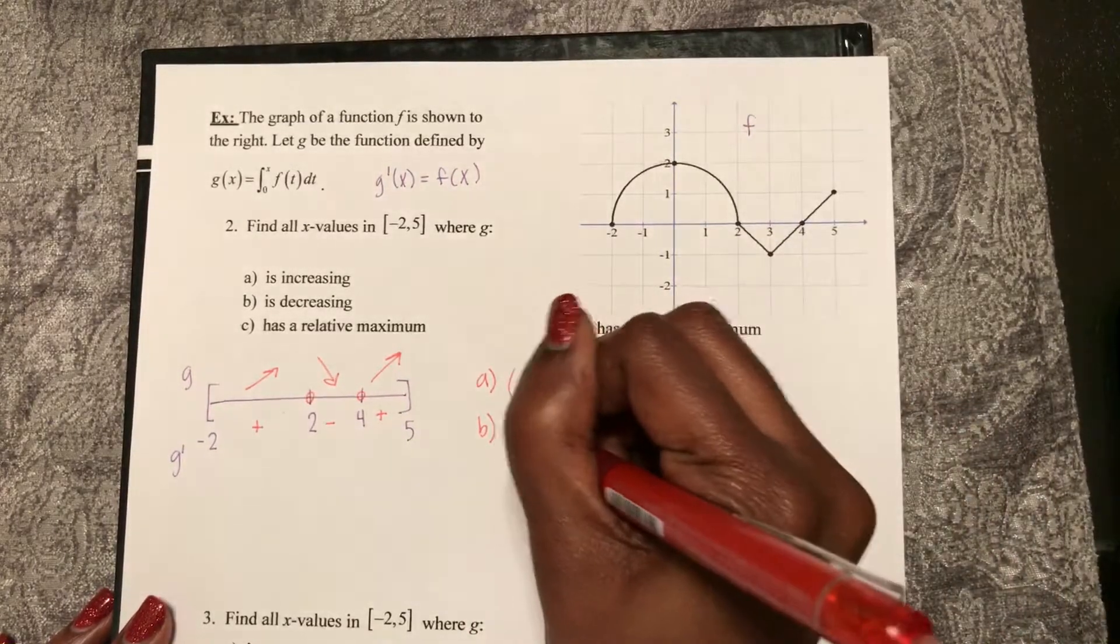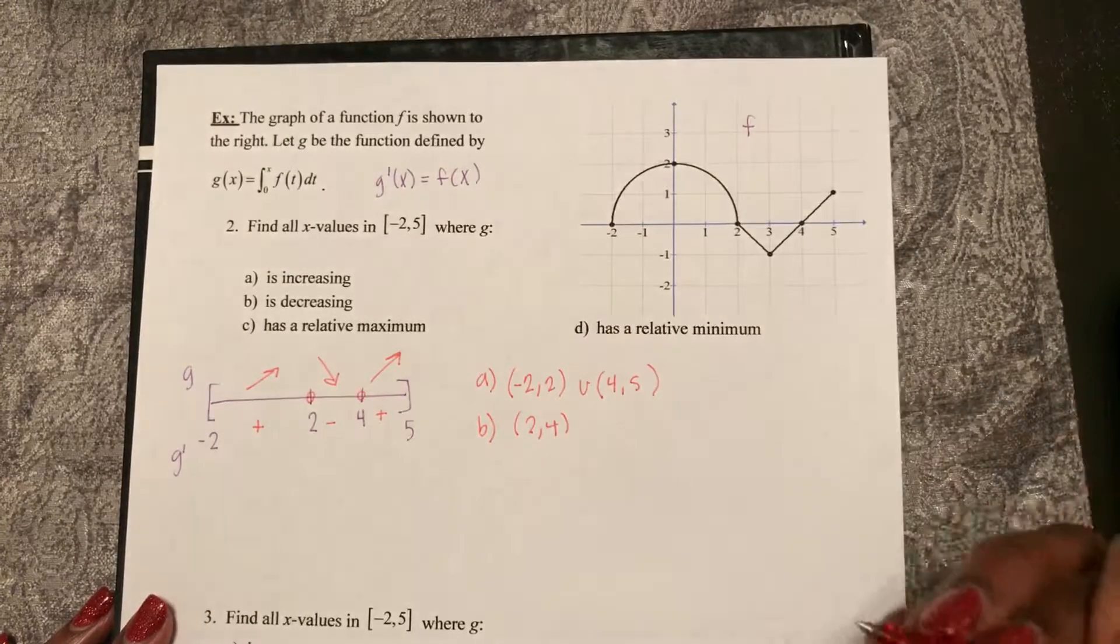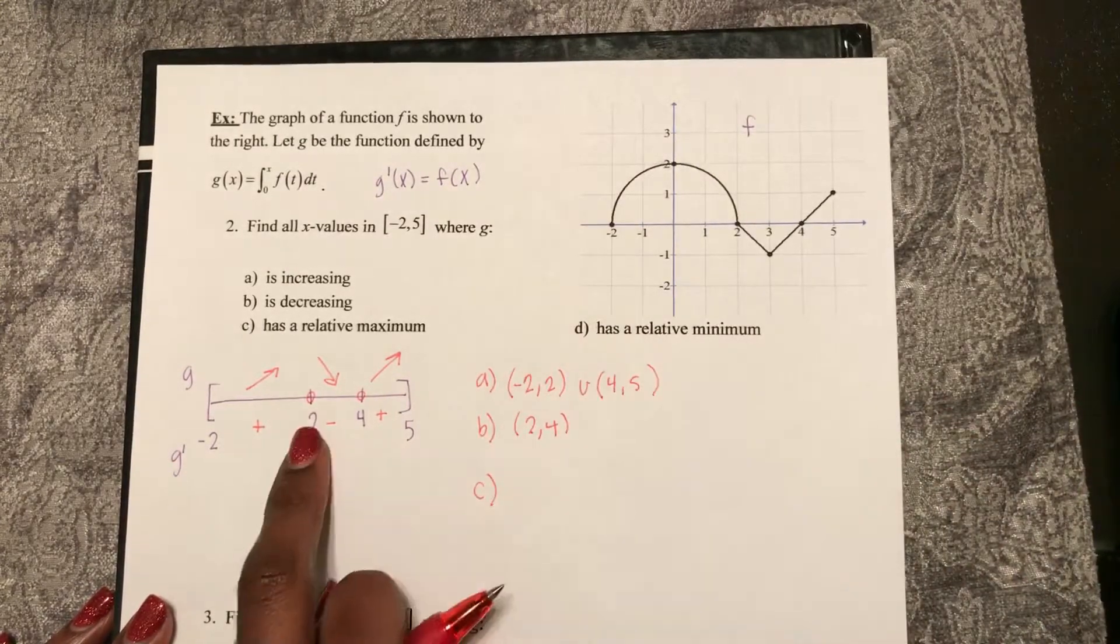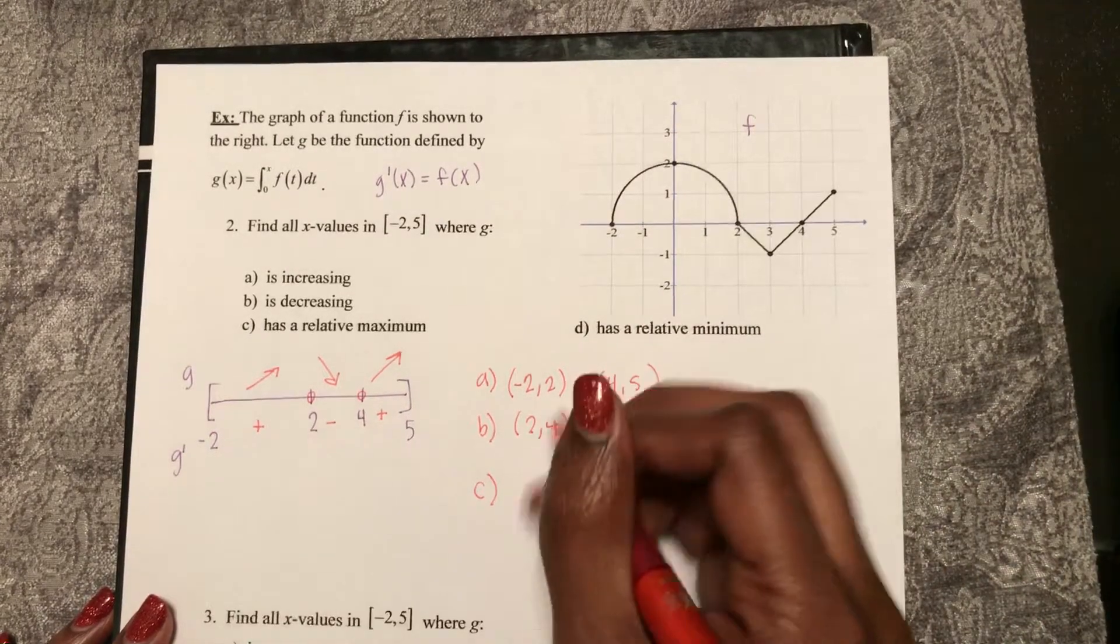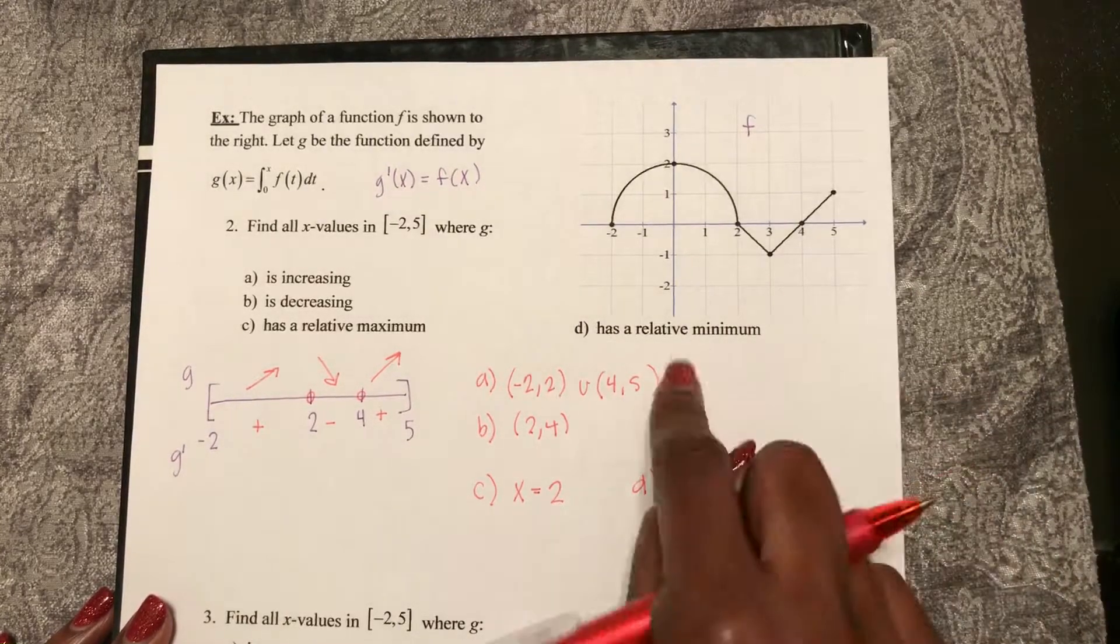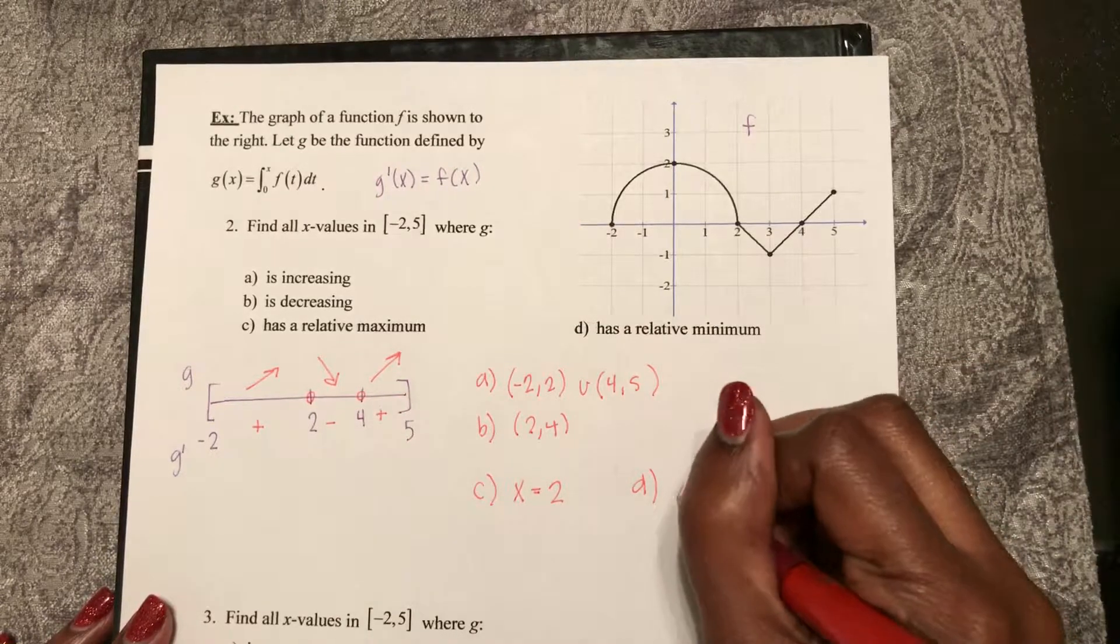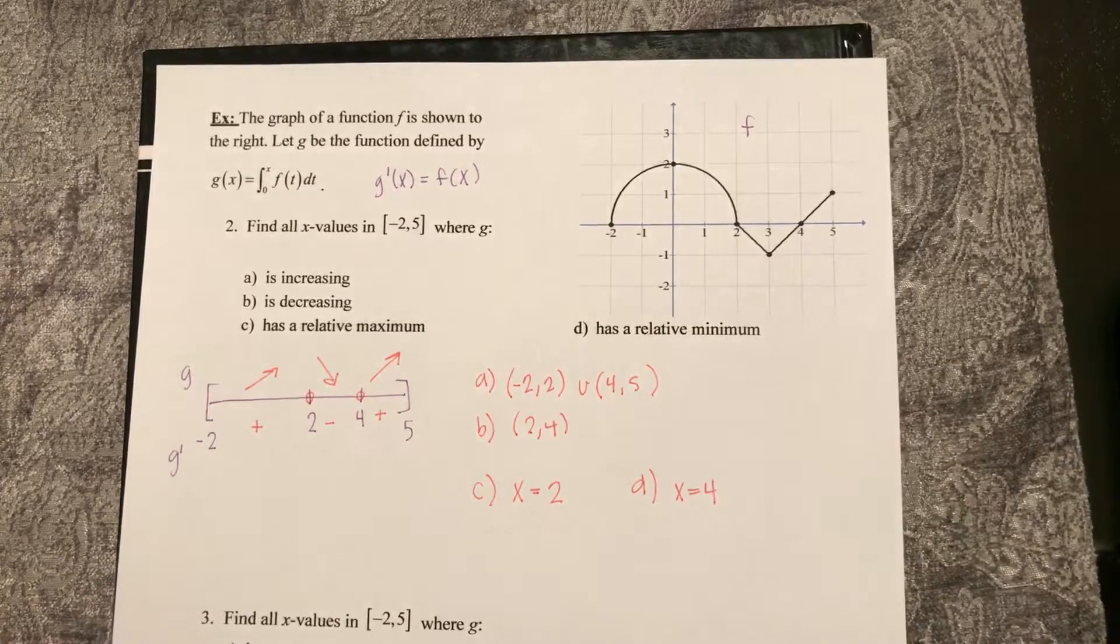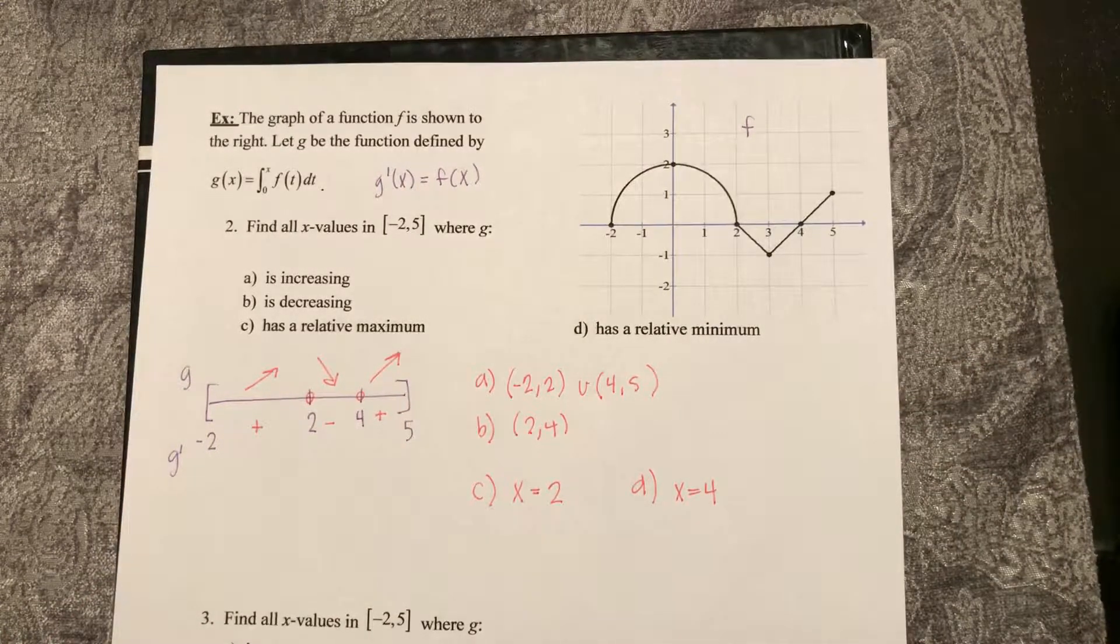Part B, it's decreasing on the open interval from 2 to 4. Part C, it has a relative maximum at x equals 2. And part D, it has a relative minimum at x equals 4, using the first derivative test from my sign chart.